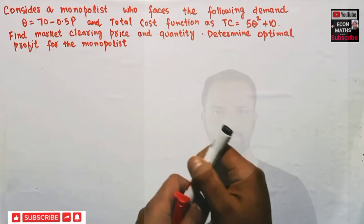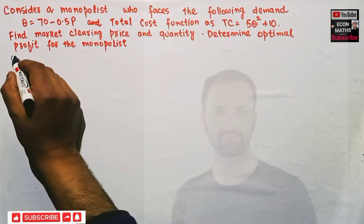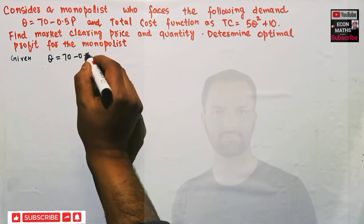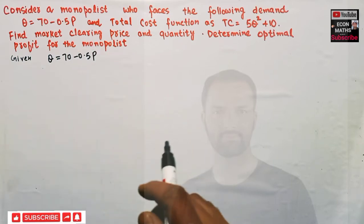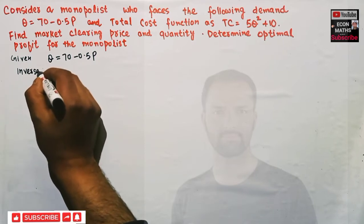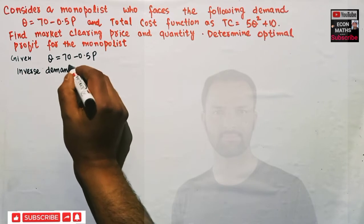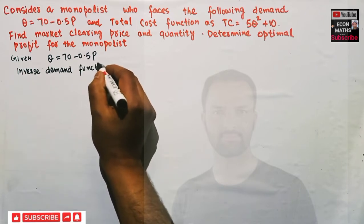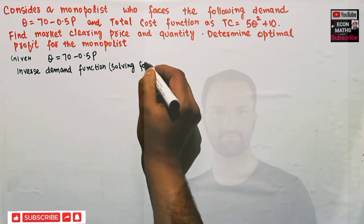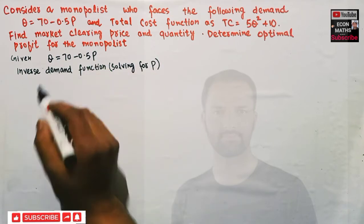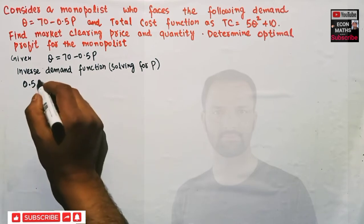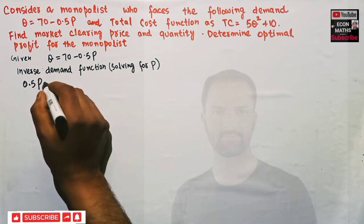So let's try to solve this question. First, we are given Q = 70 - 0.5P as our demand function. The first step will be to find the inverse demand function. By inverse demand function, we mean solving for price P.